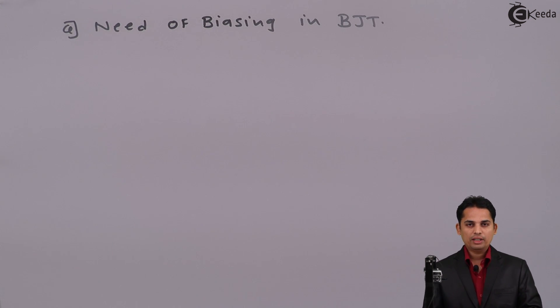First of all, the question in your mind is what is need of biasing in BJT? So the reason is that in BJT we want Q point to be stable. Stable means exactly at the middle of the load line. But there is variation in the Q point due to temperature and other reasons. So let us see that.